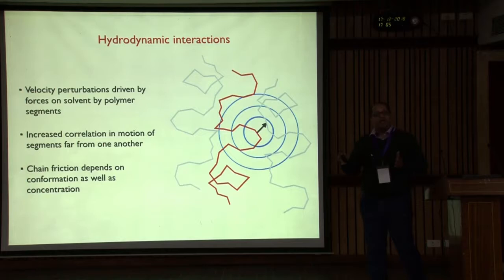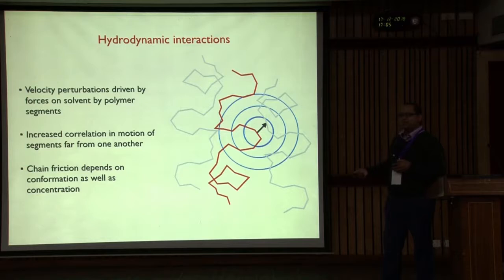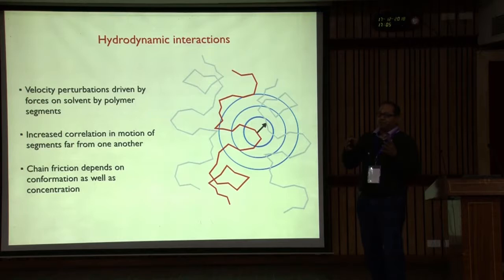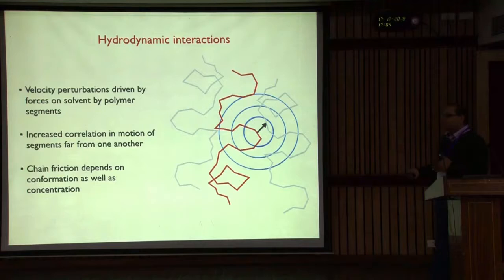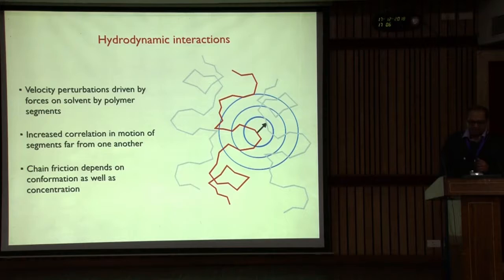Dynamical properties depend very strongly on hydrodynamic interactions. For example, the average friction of a polymer chain depends, through hydrodynamic interactions, on the conformation or stretching of the polymer as well as the concentration. If there were no hydrodynamic interactions, you wouldn't have any conformation dependence or any dependence of the friction on the shape or the presence of other chains in the system.